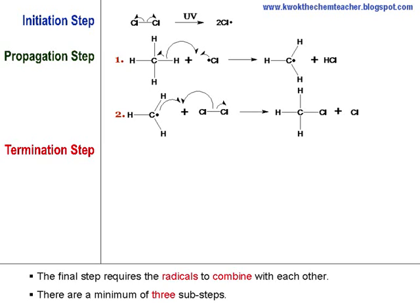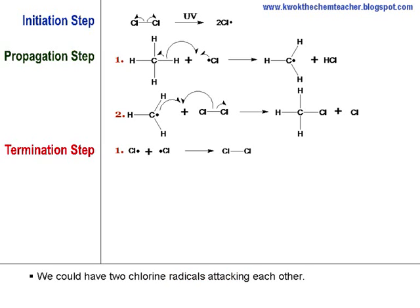In the final step is the termination step. It terminates the radical reaction, hence radical combined with each other in this step. The first thing, we could have two chlorine radicals coming together to give back our chlorine molecule.